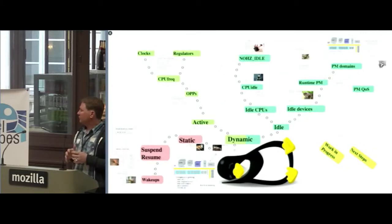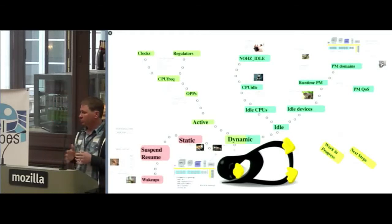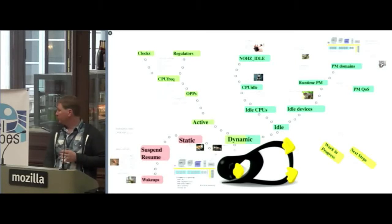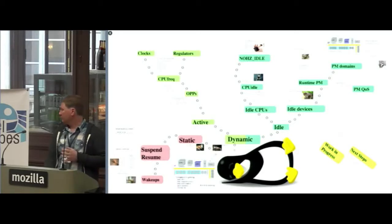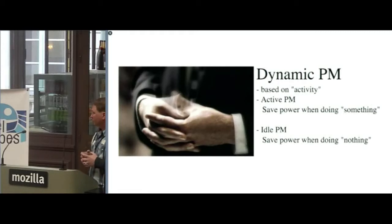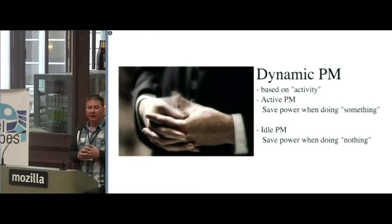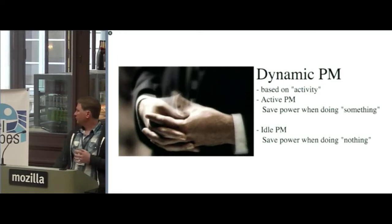That's the simple part of power management — what we call static power management. System-wide, it's just a one-shot static system where the entire system is put in a specific state. Now, all the rest of the kernel power management is what we call dynamic power management. Dynamic power management is based on the activity of the system. There are two classes: one is how to save power when you're actually doing something, and the other is idle power management — how to save power when parts of the system are not doing anything.